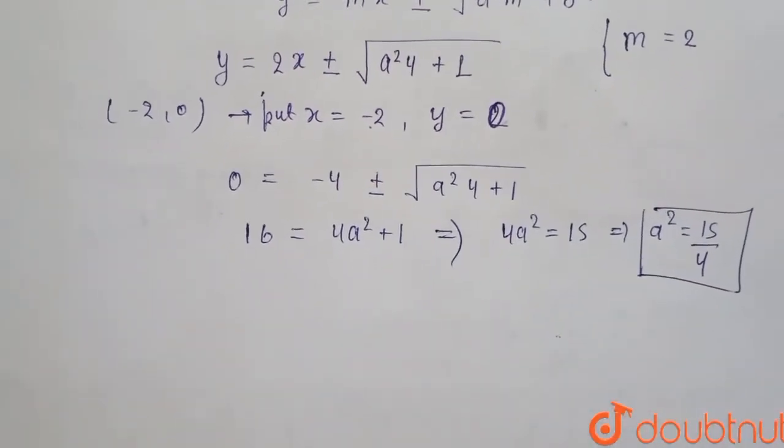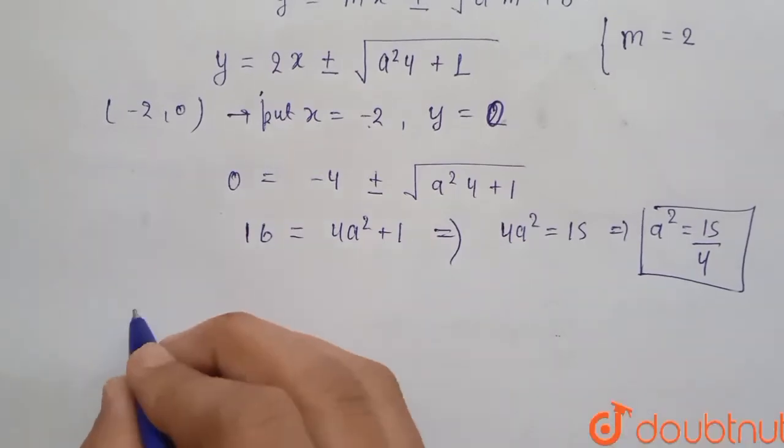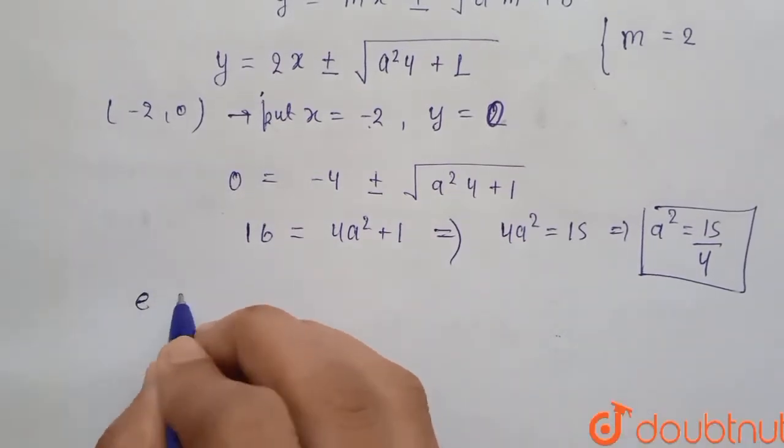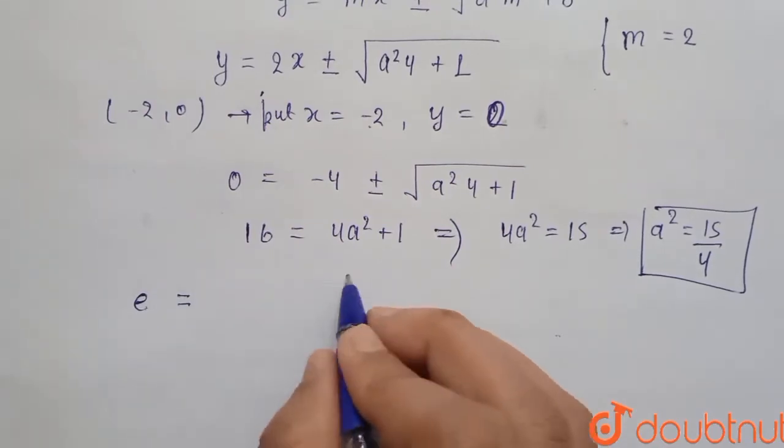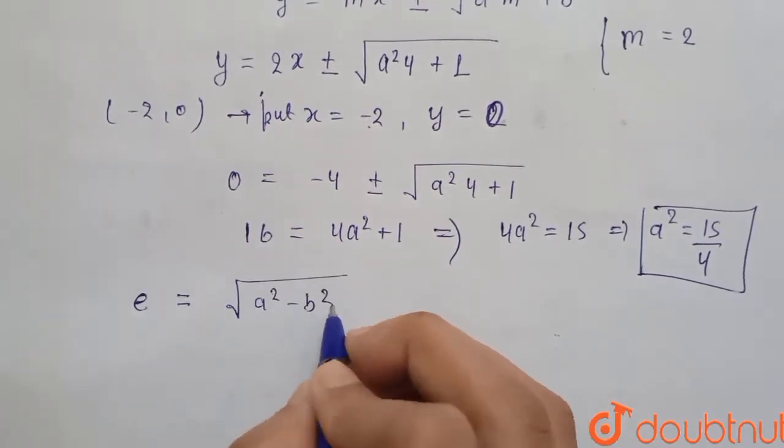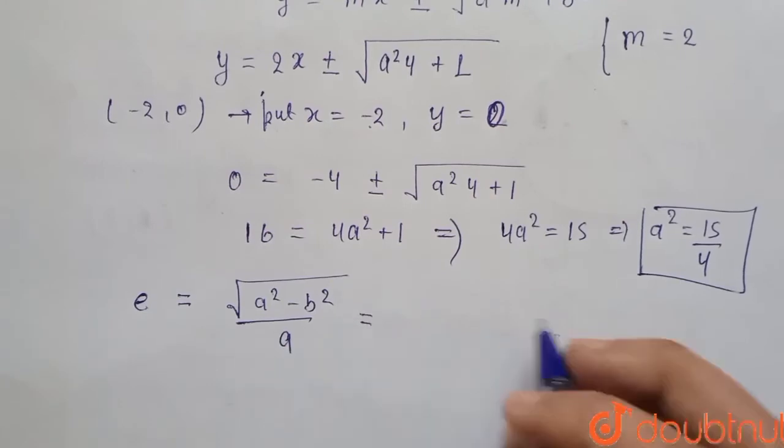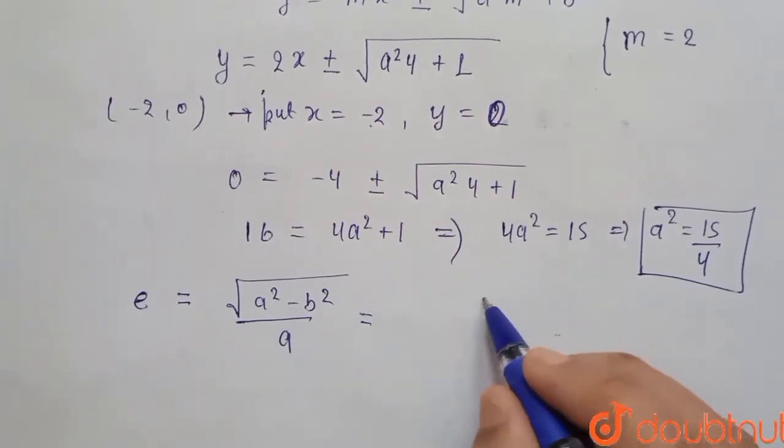Now here we have to find eccentricity. We know that eccentricity of an ellipse is equal to √(a² - b²) / a. Here now put the value.